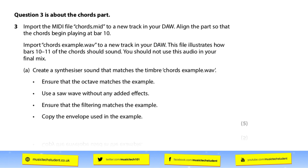The second import is for the example WAV — the same chord part you are recreating, given as a reference track. Once you've imported it, you go through these instructions: create a synthesizer sound that matches the timbre of the chord example. Each bullet point is worth a mark. First, match the octave — listen carefully and make sure whichever synth or plugin you use gets the octave exactly right. Next, use a saw wave without any effect. If you use a square wave or something else, you won't get that mark — it'll be very audible. Then match the filter, and finally match the envelope.